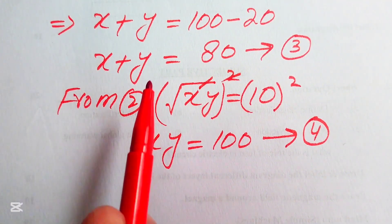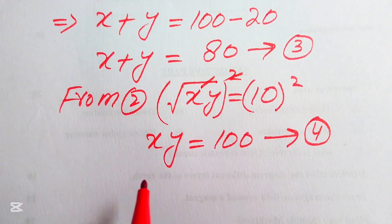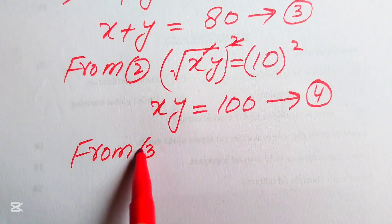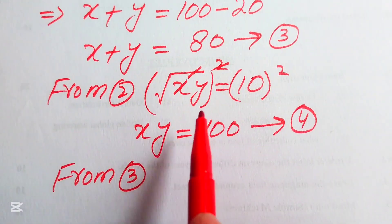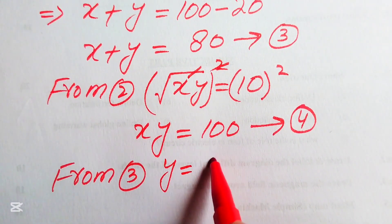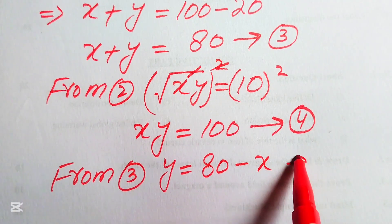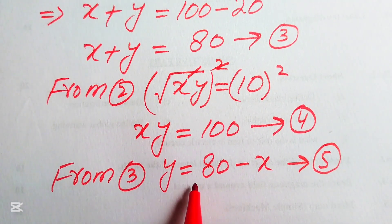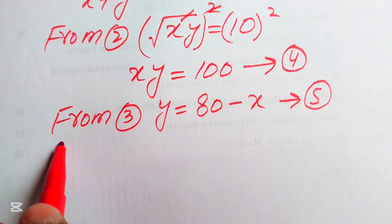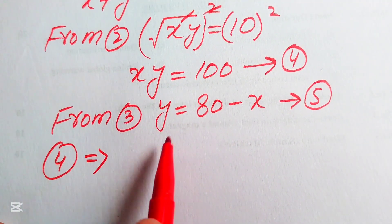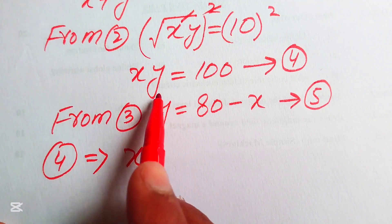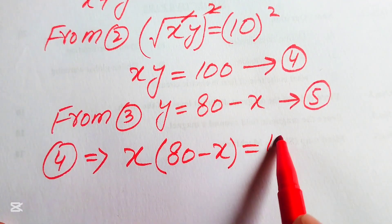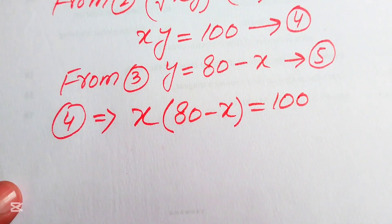Now we solve equation number 3 and equation number 4. From equation number 3, we move x to the right-hand side to get y equals 80 minus x. We call this equation number 5. We substitute the value of y into equation number 4, so equation number 4 implies x times y, and the value of y is 80 minus x, equals 100.